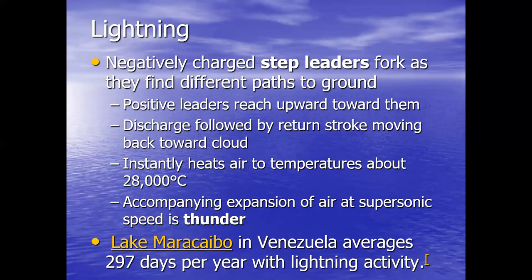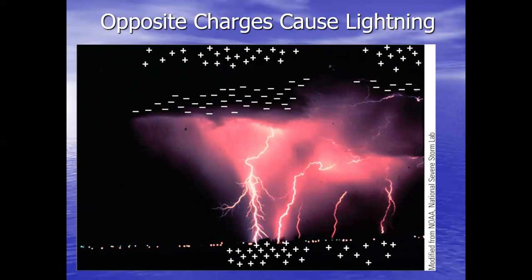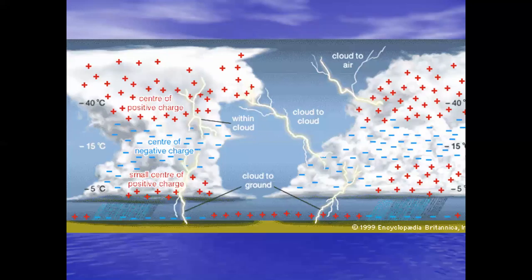Lake Maracaibo in Venezuela averages 297 days per year with lightning activity — so what do you think it's under the influence of? The intertropical convergence zone. There is still a lot we don't know about lightning, such as how these charges show up where they do — questions that lightning researchers are still trying to figure out.